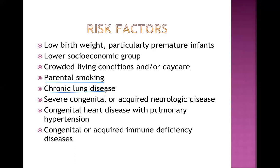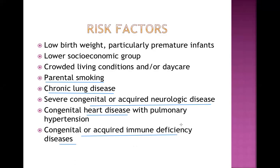Additional risk factors include chronic lung disease in the baby — one important example is bronchopulmonary dysplasia, which is a complication of prematurity — as well as severe congenital or acquired neurological disease, congenital heart disease, and congenital or acquired immune deficiency diseases.